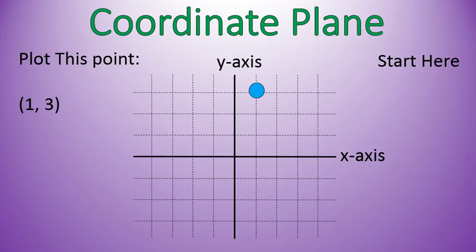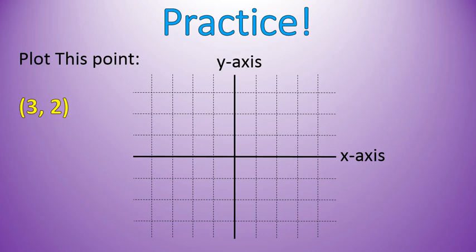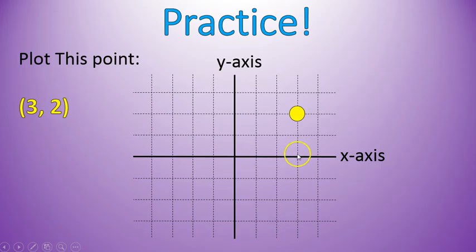Let's practice. I want you to pause the video and try to plot the point 3, 2. Find where you would put the point 3, 2. Did you find it? Was it right there — starting at our origin and going three places: 1, 2, 3, and two places: 1, 2? A positive 3 moves to the right. Positive 2 moves up. And that is how we would plot the point 3, 2.